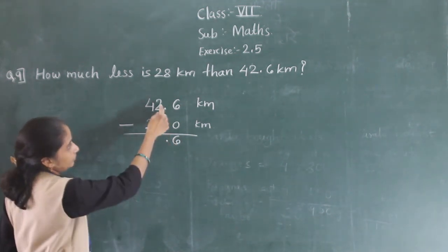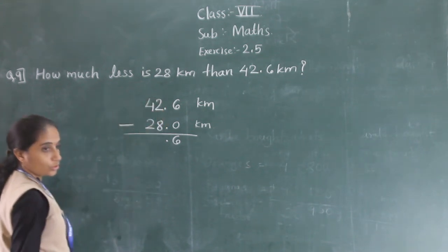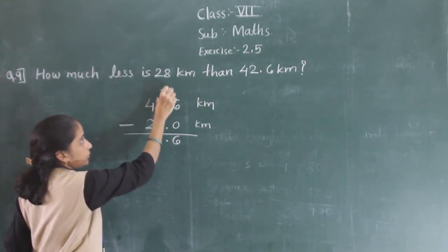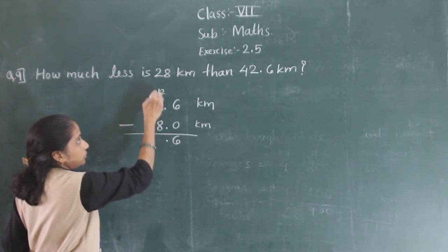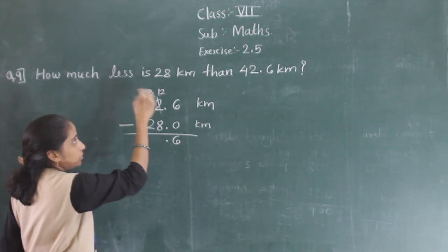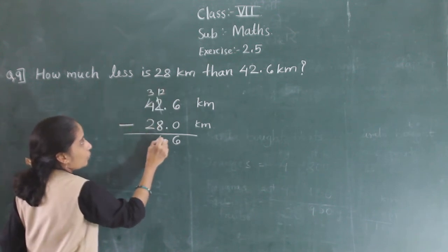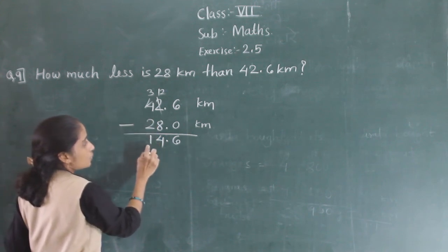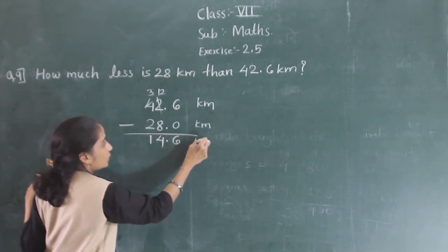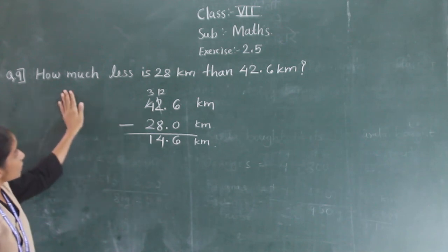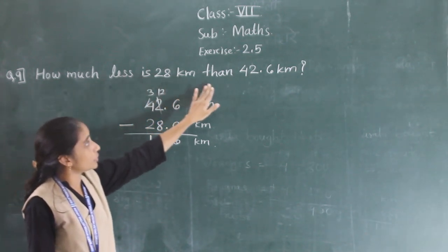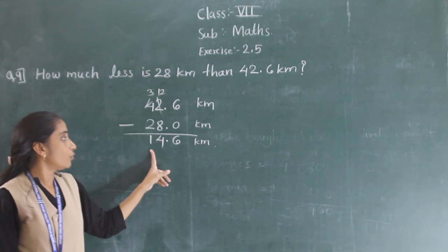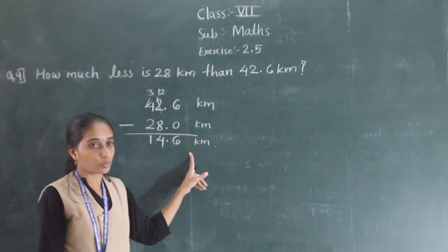So 42.6 km minus 28 km. The answer is 14.6 km. How much less is 28 km than 42.6 km? It is 14.6 km less.